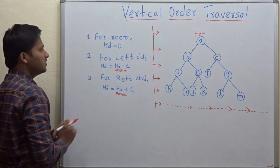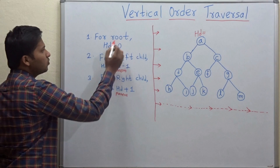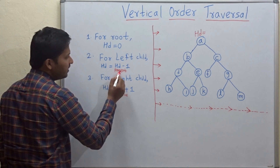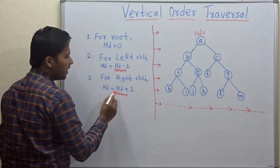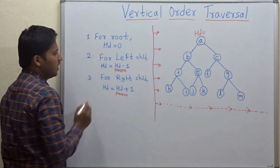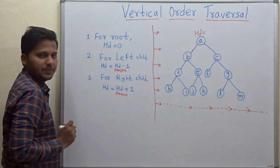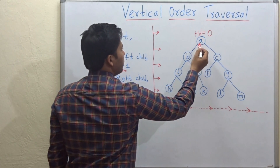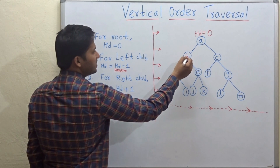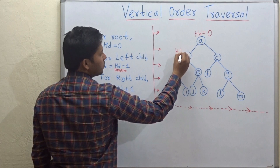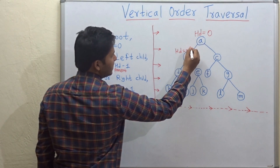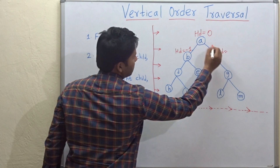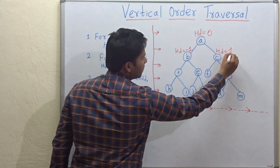For assigning the distances, we are going to use three rules. The first rule is: for root, hd is equal to 0. For left child, hd is equal to hd of parent node minus 1. And for right child, hd is equal to hd of parent node plus 1. hd denotes horizontal distance. So for root, hd is equal to 0. For left child b, hd is 0 minus 1, which is minus 1. And for right child, hd is 0 plus 1, which is plus 1.